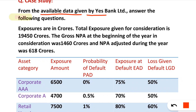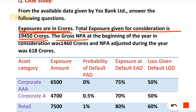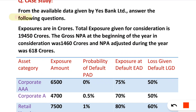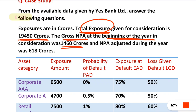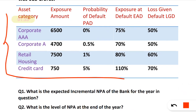From the available data given by S Bank Limited, we answer the following questions. The data given: total gross exposure is 19,450 crores, the gross NPA at the beginning of the year was 1,460 crores, and NPA adjusted during the year was 618 crores. These three figures are given in the problem statement.